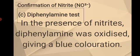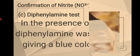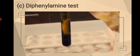For the third test for the confirmation of nitrite, which is the diphenylamine test: based on the theory from olabs.com, in the presence of nitrites, diphenylamine is oxidized, giving a blue coloration. In the experiment, after adding a few drops of diphenylamine to a portion of the aqueous solution, a deep blue coloration was obtained. It was concluded that diphenylamine got oxidized in the presence of nitrite, giving a deep blue coloration. This confirmed the presence of nitrite ions.